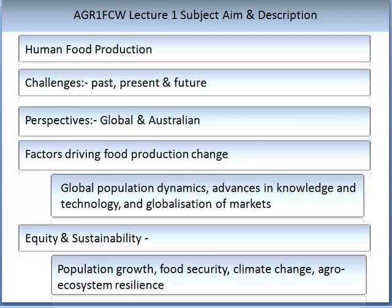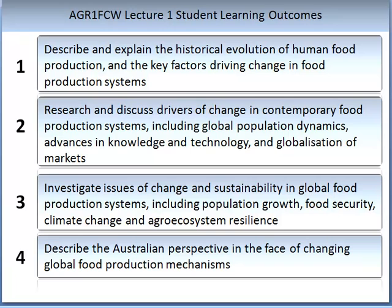In this subject, four student learning outcomes will be covered. The first is to describe and explain the historical evolution of food production and the key factors driving change in food production systems. The second is to research and discuss drivers of change of contemporary food production systems, including global population dynamics, advances in knowledge and technology, and globalisation of markets.